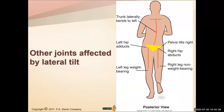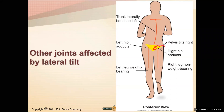Anytime we have any type of pelvic tilt, the body is going to self-correct all the way through. This happens during walking, with spinal curvature, or when we have a leg length discrepancy. The body self-corrects to keep the center of gravity right where it needs to be for balance.